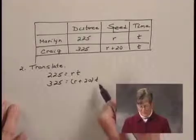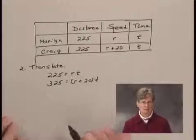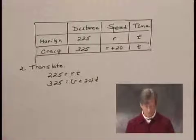Now, since the times are the same, if we would solve each of these equations for T, then we could set them equal to each other and we'd have an equation in one variable that we can solve.